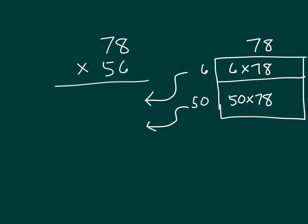6 times the 8 is 48. That's 8. Regrouping the 4. 6 times 7 being 42, plus 4 being 46. So that 6 times that 78 does give us 468. That's what we did right here.